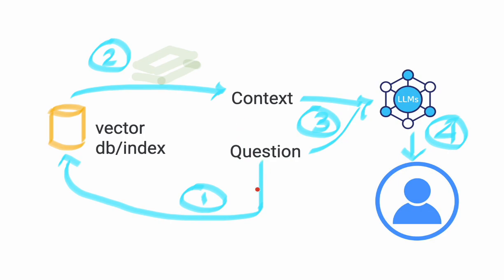A user query can be converted into a query familiar to the vector database, the vector database responds with a subset of similar documents or vectors, and then you can provide that back into the context. The same question the user asked is combined with context from an external source and passed on to an LLM via an API call, and the LLM responds back to the user. The data must be stored in a vector database or vector index for this to work.